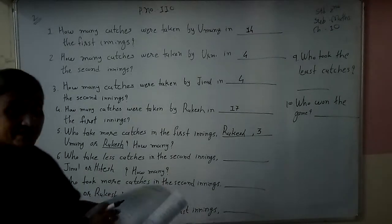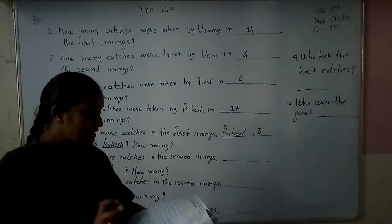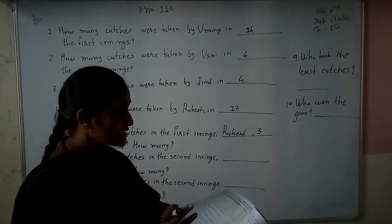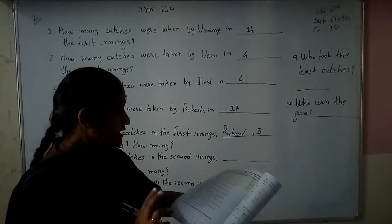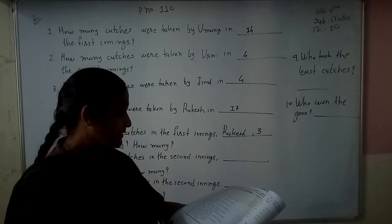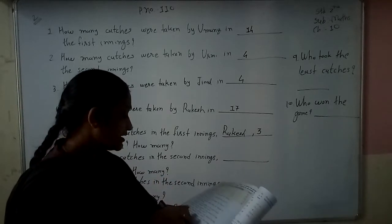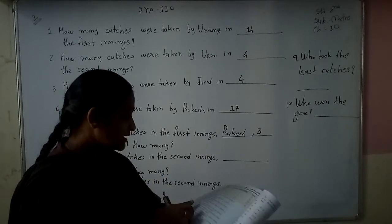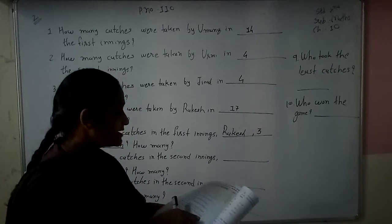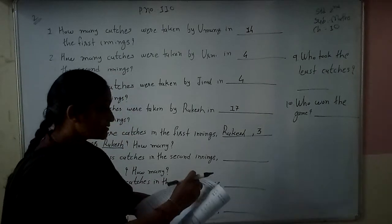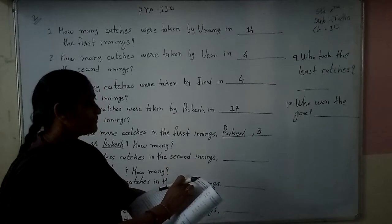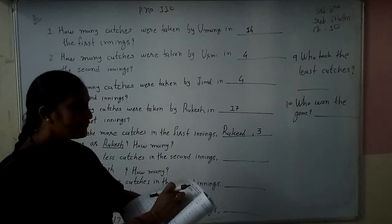In the second inning, comparing Gina's catches (4) and Hitesh's catches (5), who took fewer catches? Gina took 4 and Hitesh took 5. So Gina took fewer catches in the second inning.